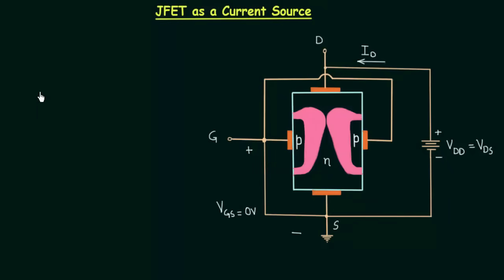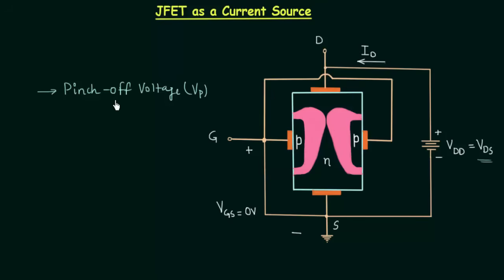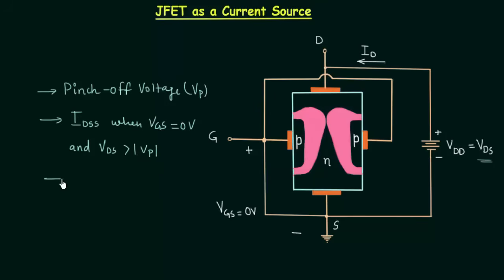In the previous presentation I explained the pinch-off voltage, represented by V subscript P. Pinch-off voltage is the drain-to-source voltage when the two depletion regions appear to touch each other — they never actually touch, but the corresponding VDS is called pinch-off voltage. We also discussed current IDSS, which is drain-to-source current when VGS is equal to 0V and VDS is greater than the magnitude of pinch-off voltage VP.